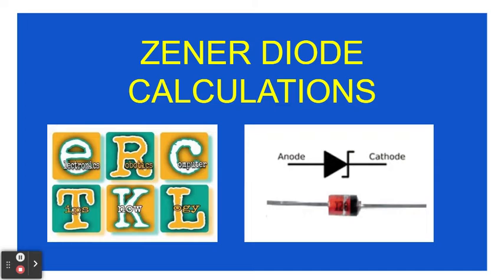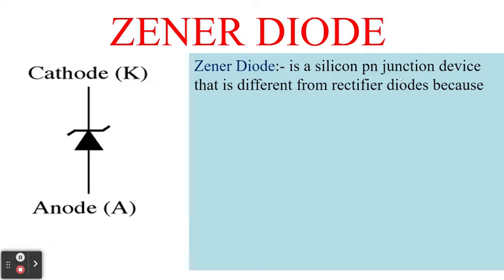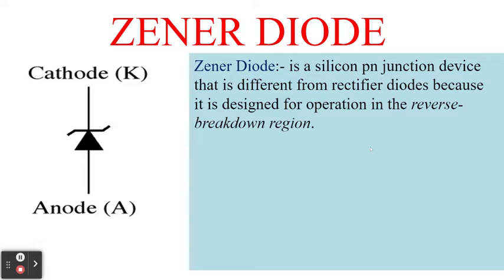Welcome to ERC Tipsnology. This time we will be continuing our discussion about Zener diode calculations. But before that, let's do some review of what a Zener diode really is. A Zener diode is a silicon PN junction device that is different from rectifier diodes because it is designed for operation in the reverse breakdown region.